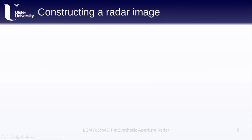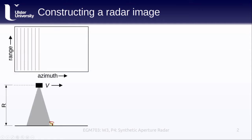In the previous lesson, we showed how side-looking radars receive signals from objects at different slant ranges, which means that we can effectively create one line of an image. Now we'll show how we construct the rest of the image bit by bit. Here we have our radar image, with the range and azimuth shown.